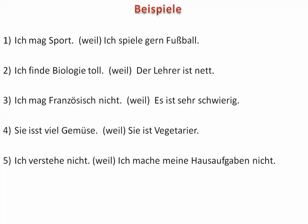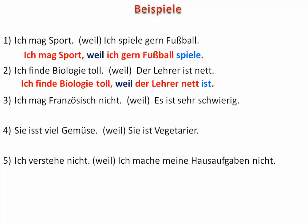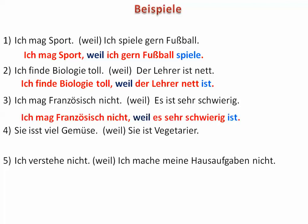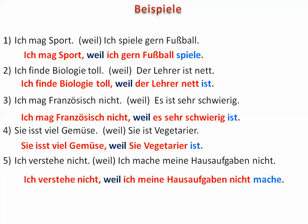Now some examples combining sentences using the subordinating conjunction 'weil.' If you want to try it on your own, stop the video here. Otherwise: 'Ich mag Sport, weil ich gern Fußball spiele.' 'Ich finde Biologie toll, weil der Lehrer nett ist.' 'Ich mag Französisch nicht, weil es sehr schwierig ist.' 'Sie isst viel Gemüse, weil sie Vegetarier ist.' 'Ich verstehe nicht, weil ich meine Hausaufgaben nicht mache.' Notice how 'spielen' has been moved to the end of its clause.